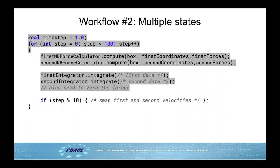For replica exchange, add code that every 10 steps swaps velocities between systems. A common use case is running at different temperatures — different velocities — and periodically swapping to increase phase-space exploration while still collecting statistics at the lower temperature.